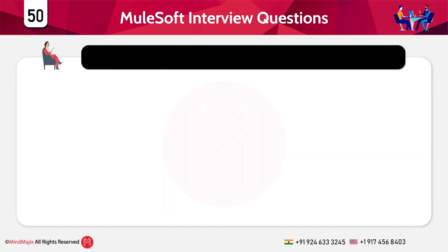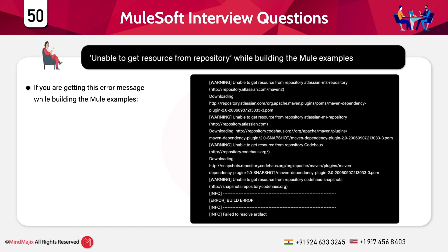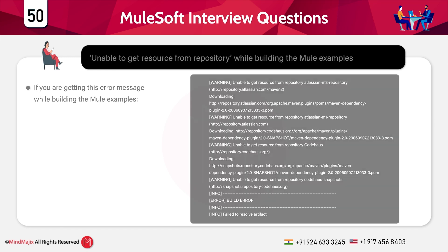What do you do if you get the error 'unable to get source from the repository' while building Mule applications? To resolve this error, you just need to change the version of the dependency in the pom.xml file. In the pom.xml file for your Mule application, change the version value of the dependency. Once you do that, the error will be resolved. To solve this error, you must understand the components of the pom.xml file.